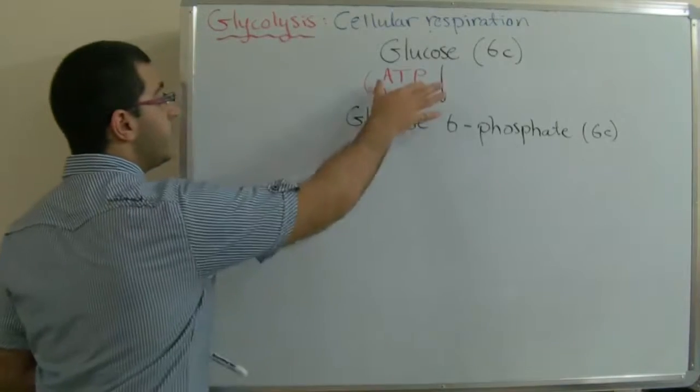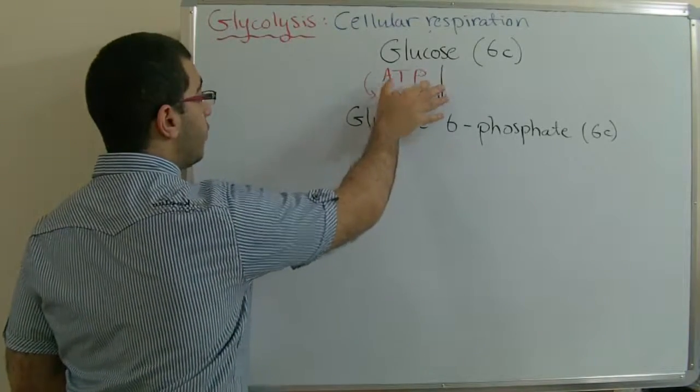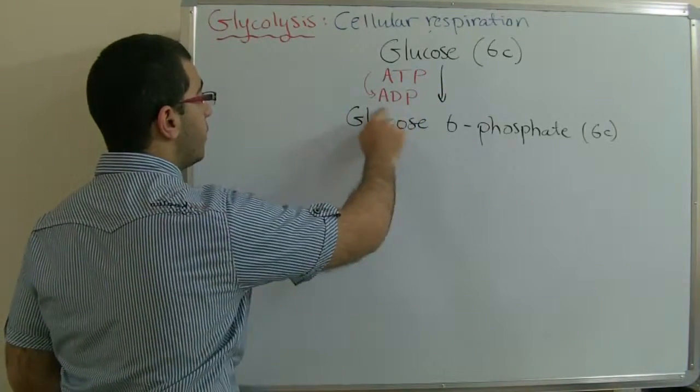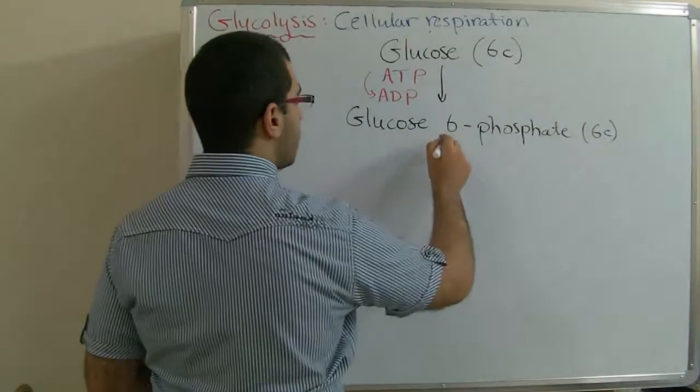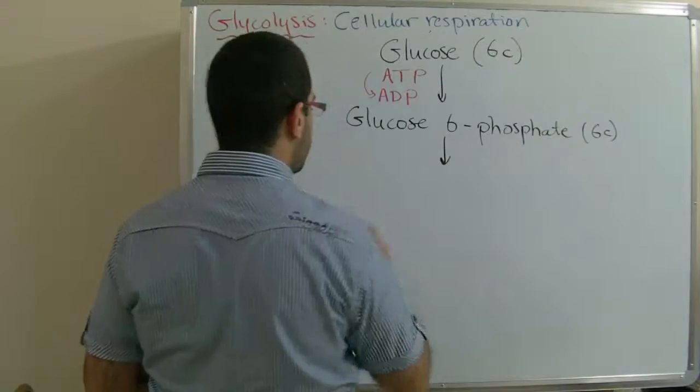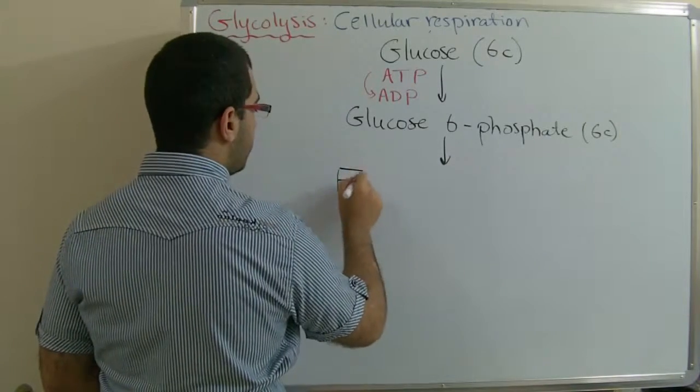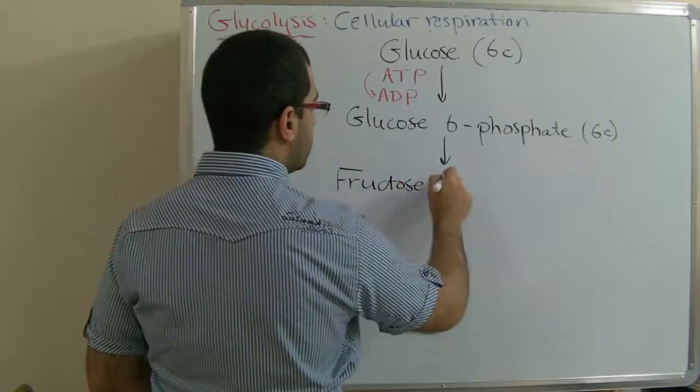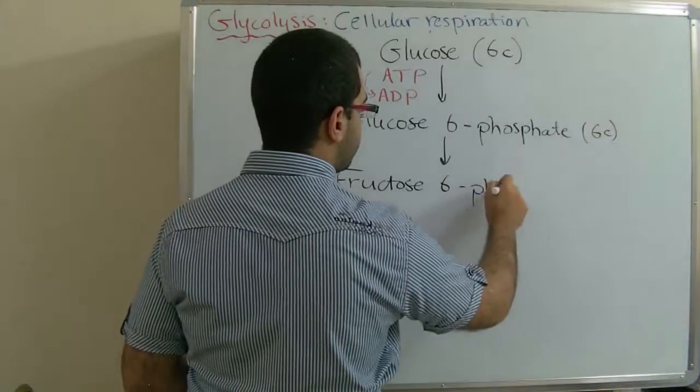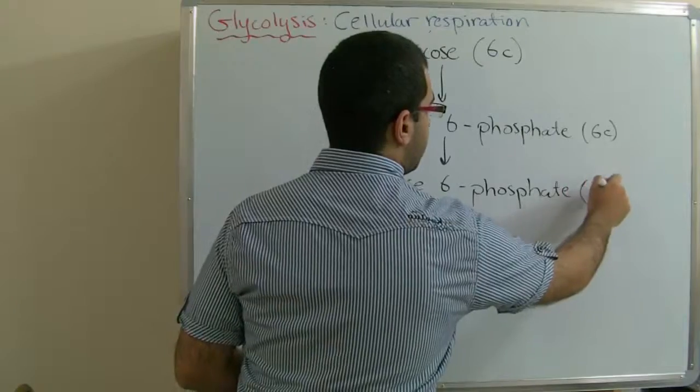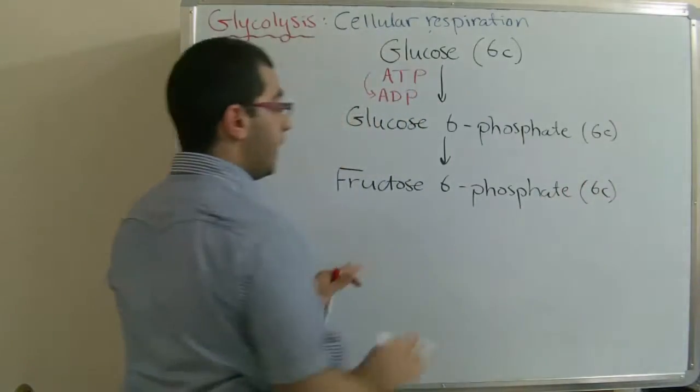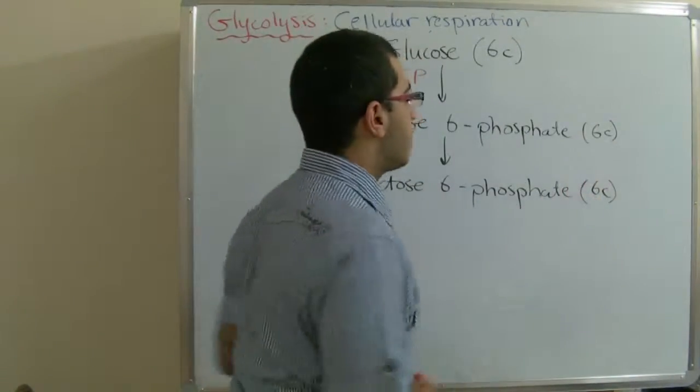So, an ATP molecule loses a phosphate group and changes into ADP. Then, glucose 6-phosphate changes into fructose 6-phosphate, which still contains 6 carbon atoms.